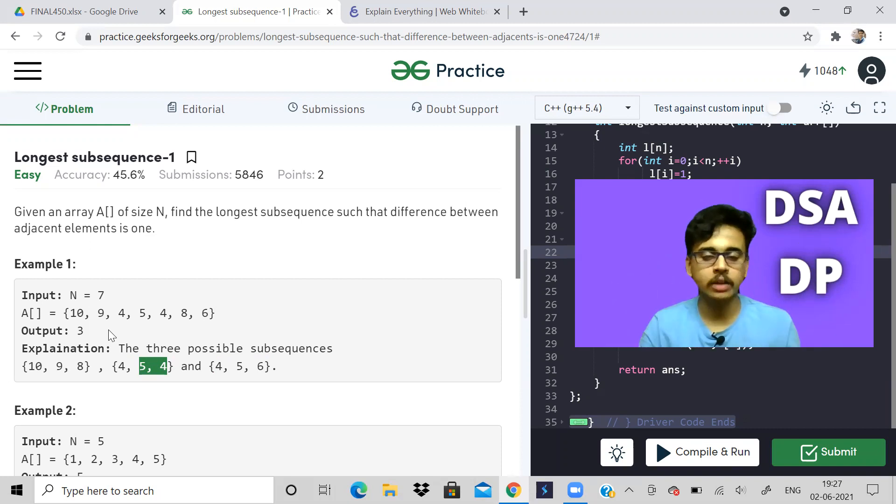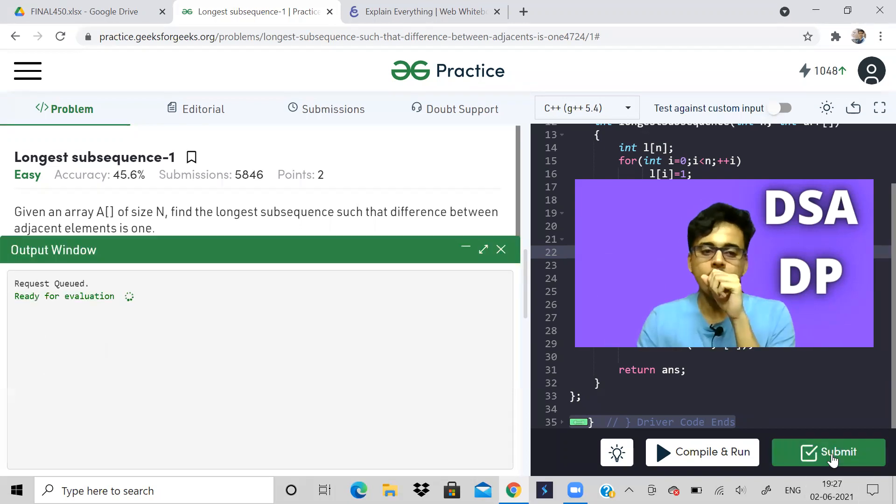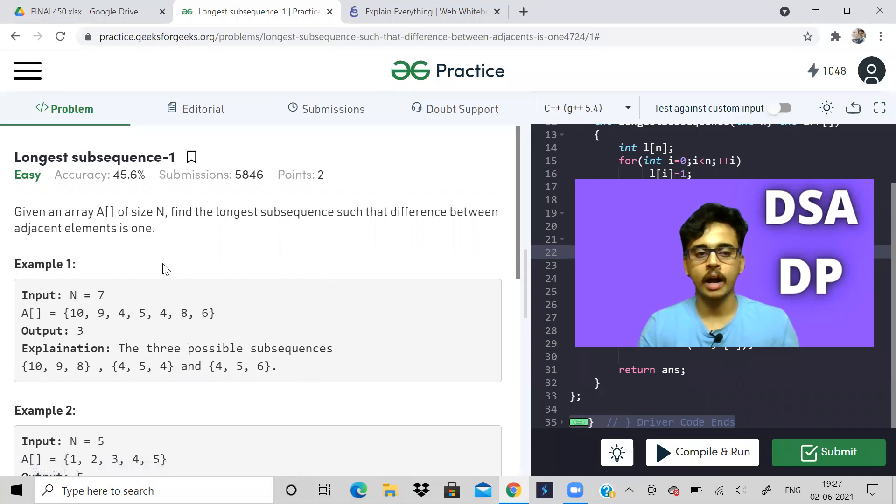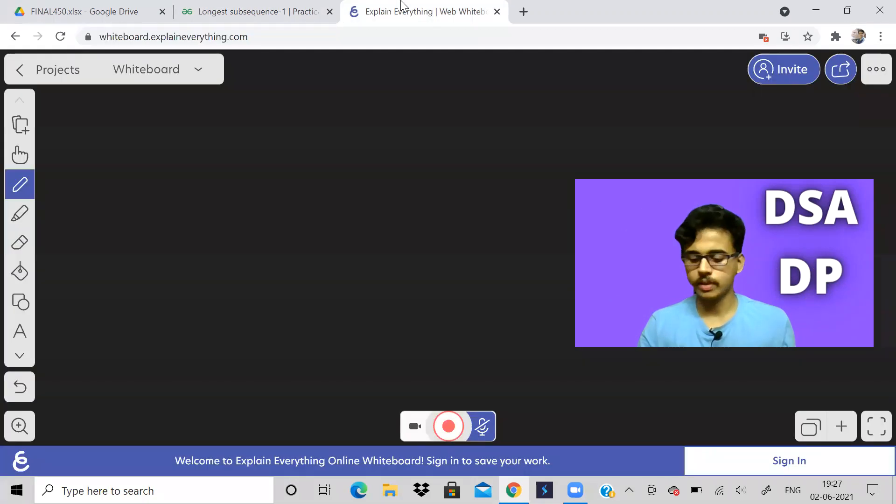So we should keep one thing in mind. It is not clearly mentioned here - absolute value of adjacent elements should be equal to one. That's how I coded and solved it. I coded it like that and I'm getting the correct answer. So when you're solving this question, keep that thing in mind. It should be the absolute difference between adjacent elements.